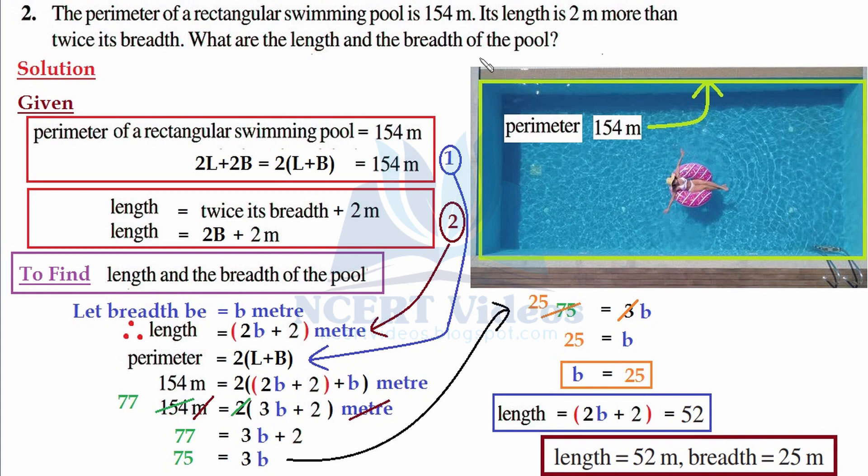So if I start walking from this point all the way around its outside path and reach the same point back, that will be the perimeter, and that is equal to 154 meters. All clear so far?